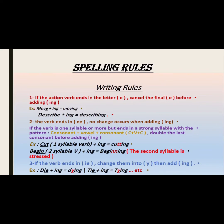Third rule: if a verb ends in -ie, change -ie into -y then add -ing. For example, 'die' becomes 'dying,' 'tie' becomes 'tying.' We must change -ie to -y first because keeping -ie before -ing would make the spelling and pronunciation incorrect.